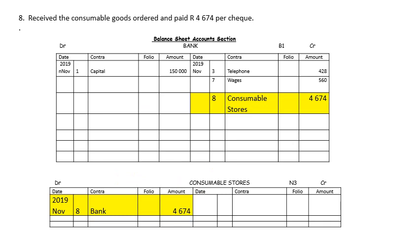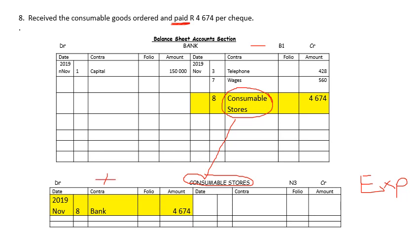On the 8th, we received a Consumable Goods order and we paid per cheque. If we pay, money comes from the bank. Bank being an asset will decrease on the credit side. You are paying Consumable Stores, which means your other account concerned will be Consumable Stores. Consumable Stores is a nominal account because it is an expense. The more you spend on Consumable Stores, the bigger the expense becomes. So on the debit side of Consumable Stores, on the 8th of November, the money is coming from bank, and the amount is $4,674.